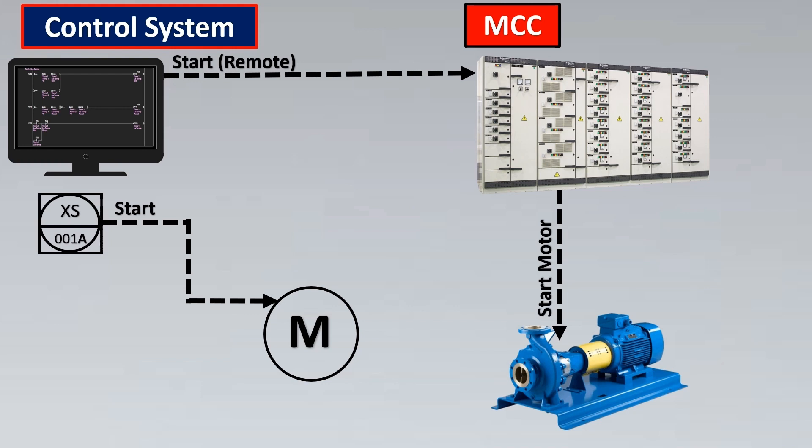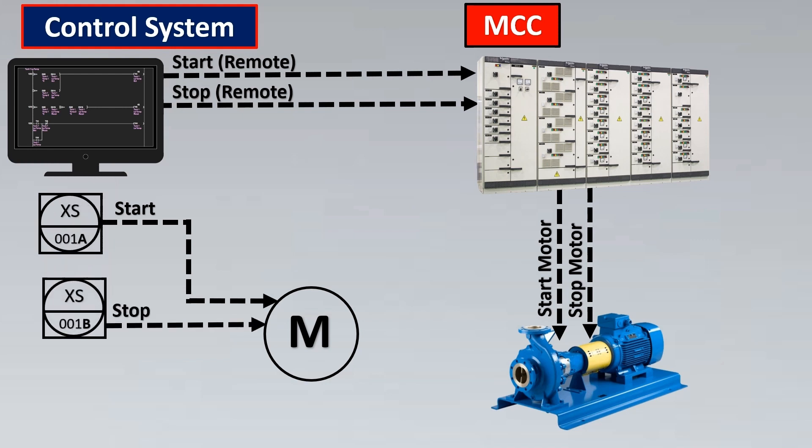Similarly, we have the stop signal going from the control system to MCC, from MCC to your pump. This is represented in the P&ID as a hardwired signal. If you can see in the symbol, the direction is also shown going from the control system to the motor.